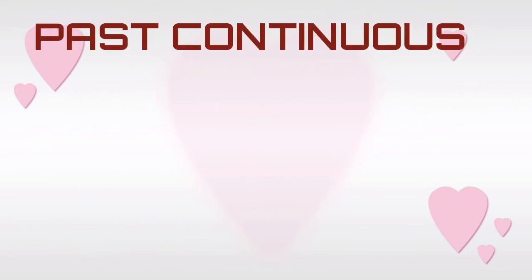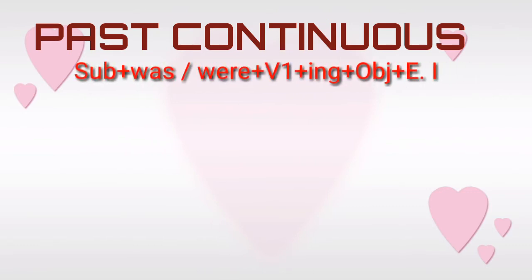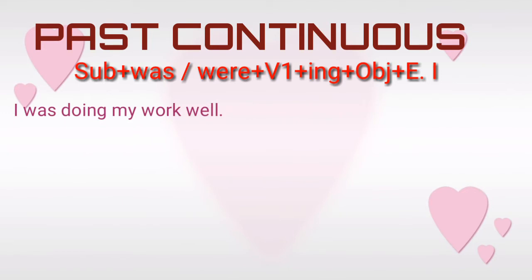The second one is past continuous. What is the structure of past continuous tense? Subject plus was or were plus V1 plus -ing plus object plus extra information. Was or were denote past be-forms. Was is singular and were is plural. We will write one example: I was doing my work well. Here we have an auxiliary verb. The subject 'I' is singular so we use 'was'. We will use 'were' for plural subjects. Remember, was or were plus V1 plus -ing denotes past continuous tense.